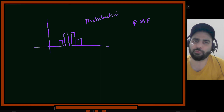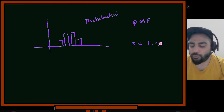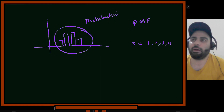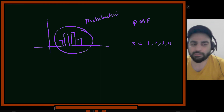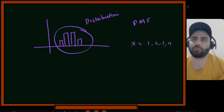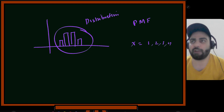If X can take values 1, 2, 3, 4, the PMF of a binomial distribution looks somewhat like a bell shape. I have coded some of these distributions so you can memorize and visualize how they look. Let me show you the code.